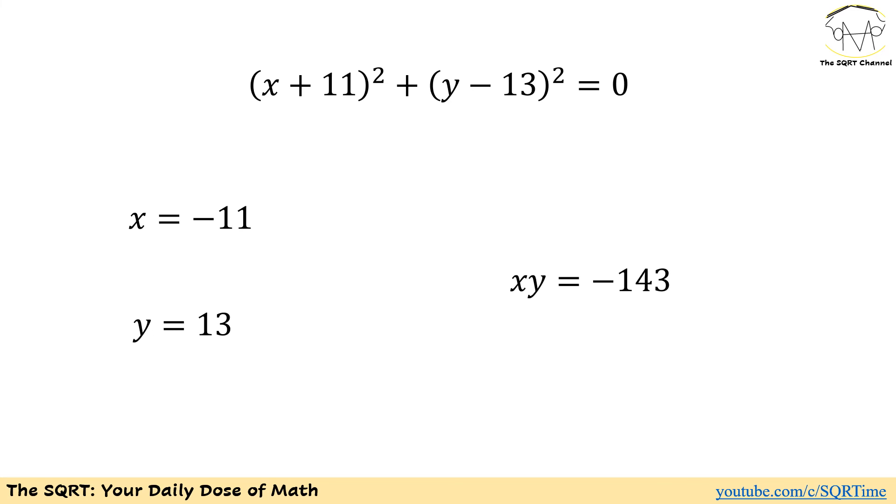Now we have sum of two positive terms equals to 0, so the first term has to be 0 and also the second term has to be 0.